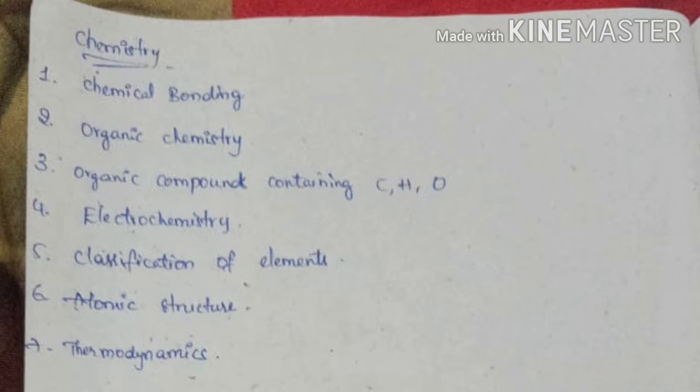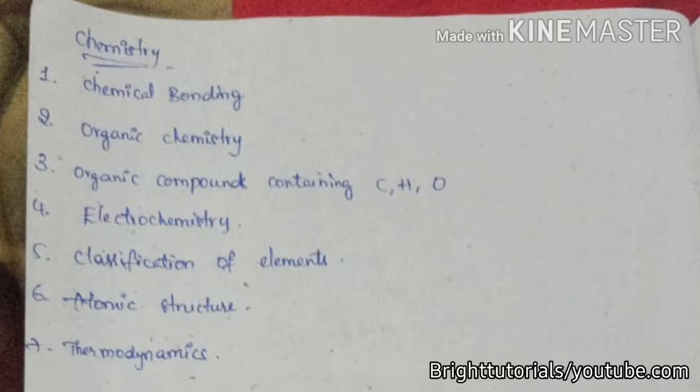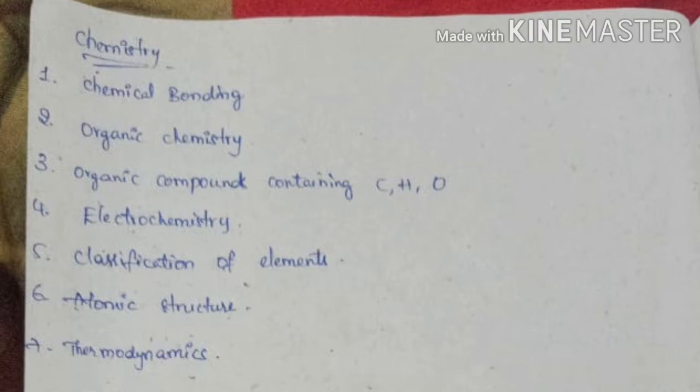Let's start with the subject chemistry. In chemistry you should go for chapters like chemical bonding, organic chemistry is up to you. If you want to go for organic chemistry you can go, otherwise I suggest you if you don't know anything regarding organic chemistry you can directly leave it and study all the chapters of inorganic chemistry.